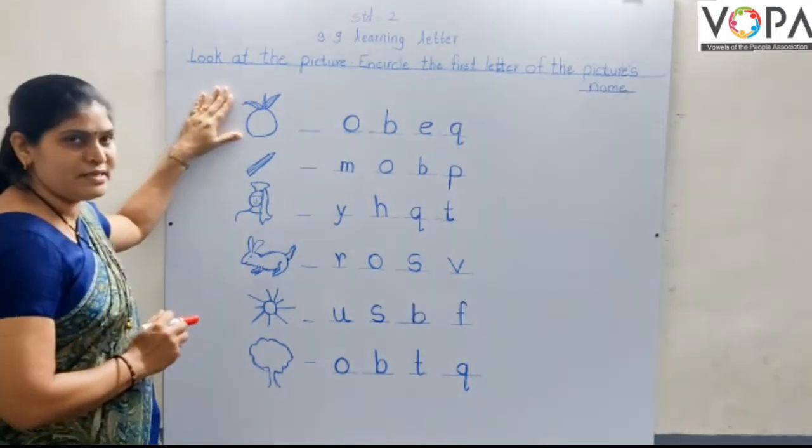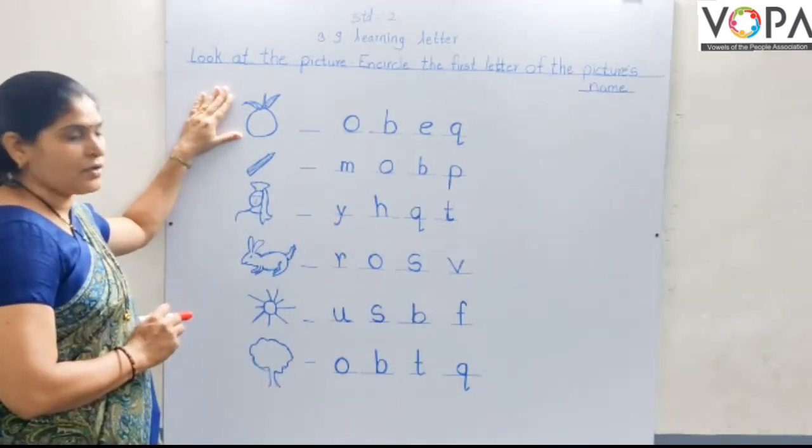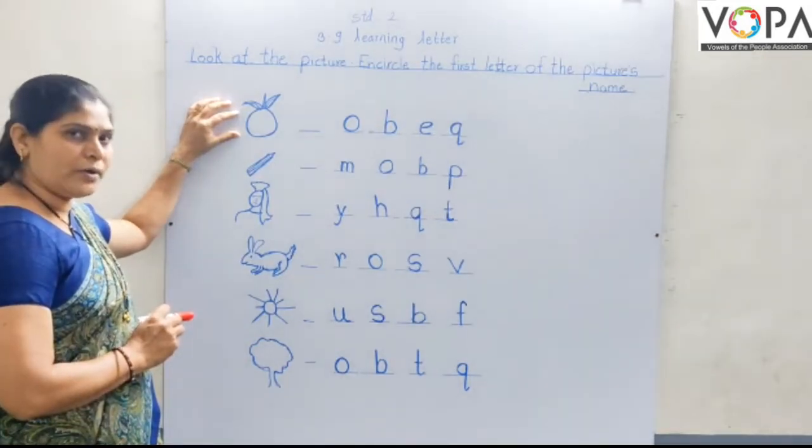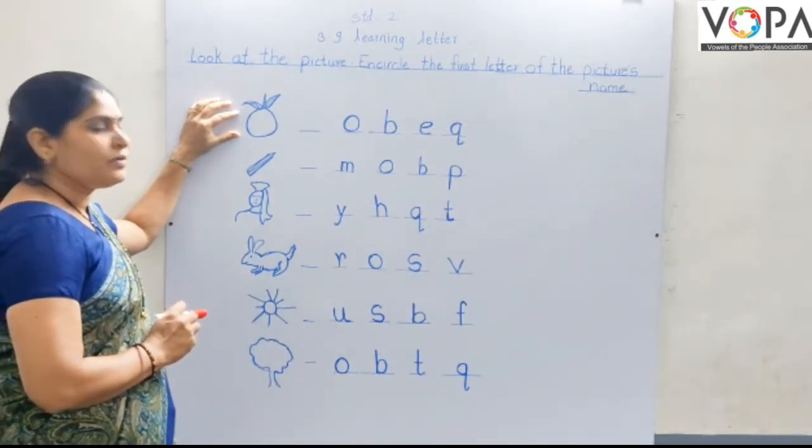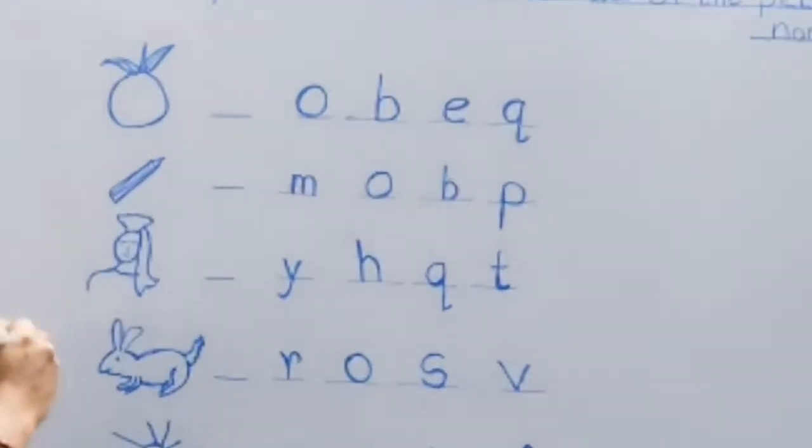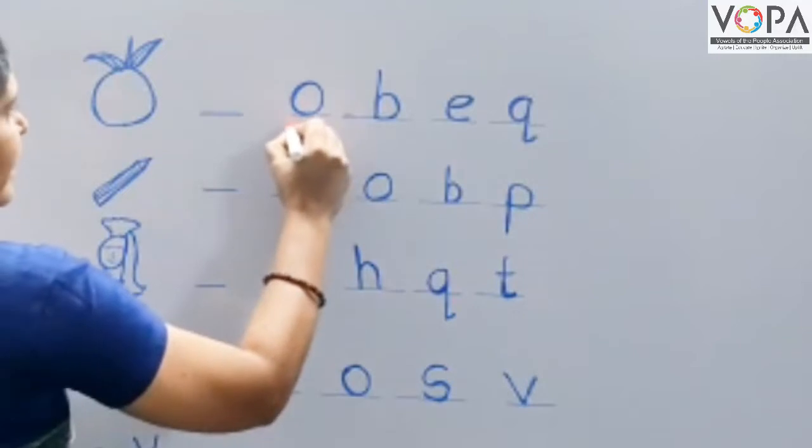What is this? This is the orange. O for orange. O-R-A-N-G-E, orange. So the first letter of orange is O. So we circle round the letter O.